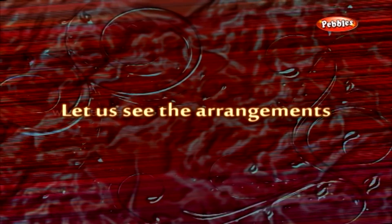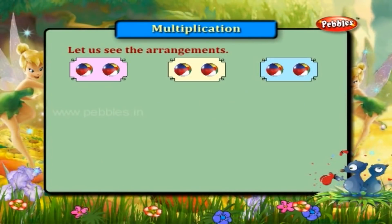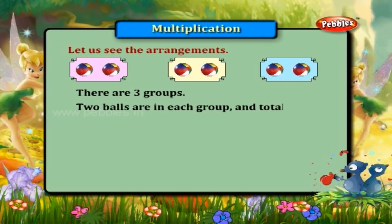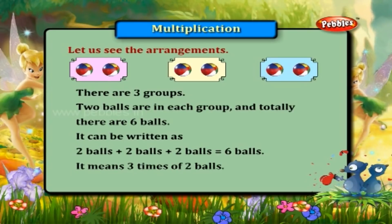Let us see the arrangements. There are three groups. Two balls are in each group, and totally there are six balls. It can be written as two balls plus two balls plus two balls is equal to six balls. It means three times of two balls — three into two balls is equal to six balls.